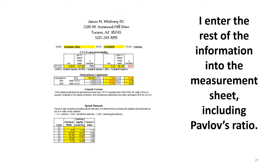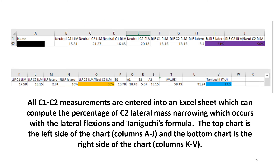I enter the C1 lateral offset information into the Excel sheet along with Pavlov's ratio. All C1-C2 measurements, including the lateral offsets, are entered into another Excel sheet which can compute the percentage of C2 lateral mass narrowing during the lateral flexions and Taniguchi's formula. At this point, I haven't started writing the report yet, but I have a good idea as to what the important findings are.